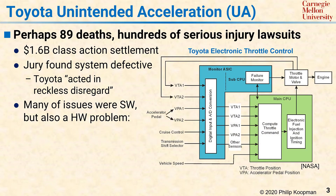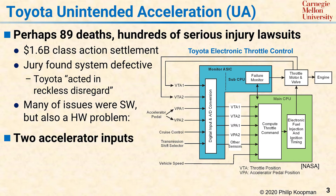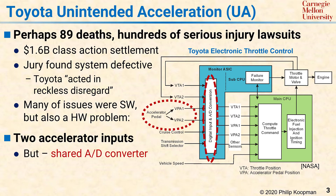This is a simplified diagram of the ETCS taken from NASA's analysis of that system. You can see that there are two voltages from two different sensors on the accelerator pedal, so that if one of the accelerator pedal sensors fails, the system is designed for there to be another sensor so you can detect that failure. However, both copies of the accelerator pedal sensor go through the same analog-to-digital converter on the same chip. The other chip, the main CPU, has no independent way to receive accelerator pedal information.